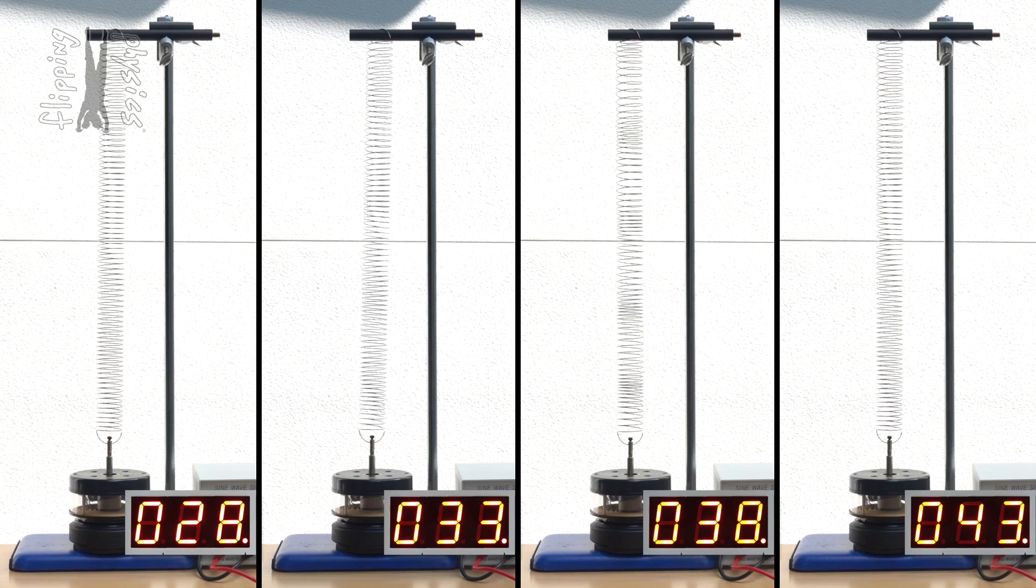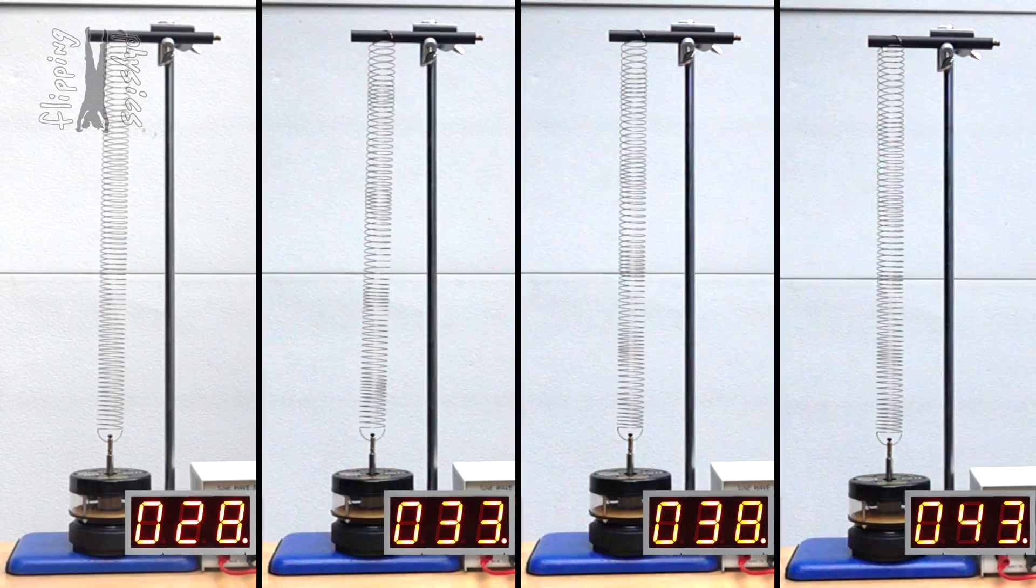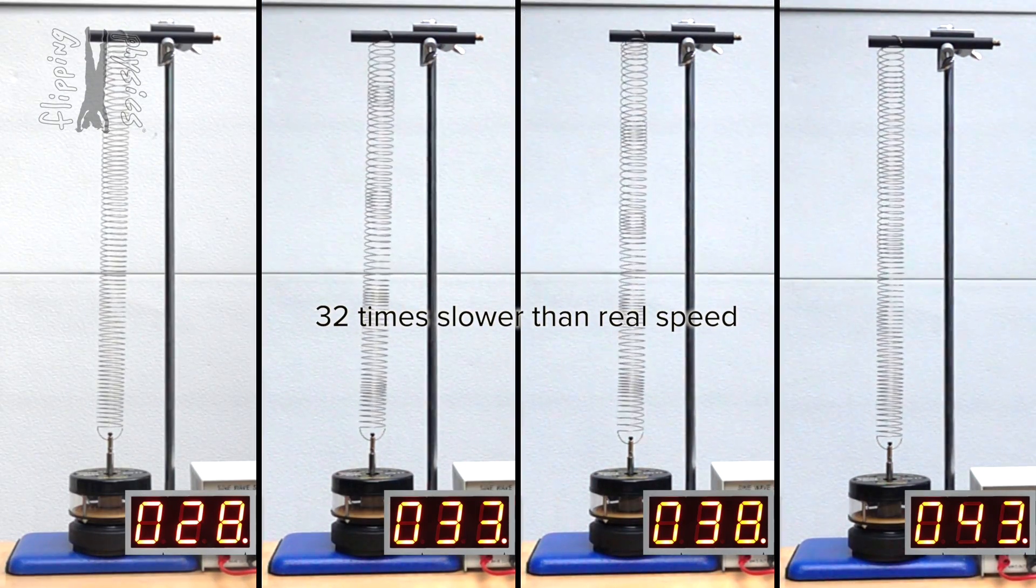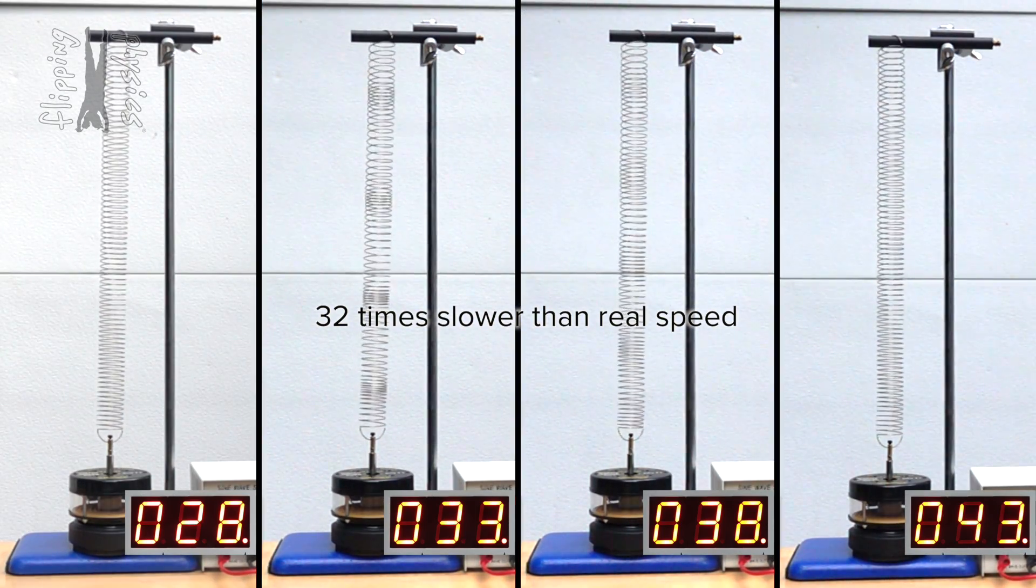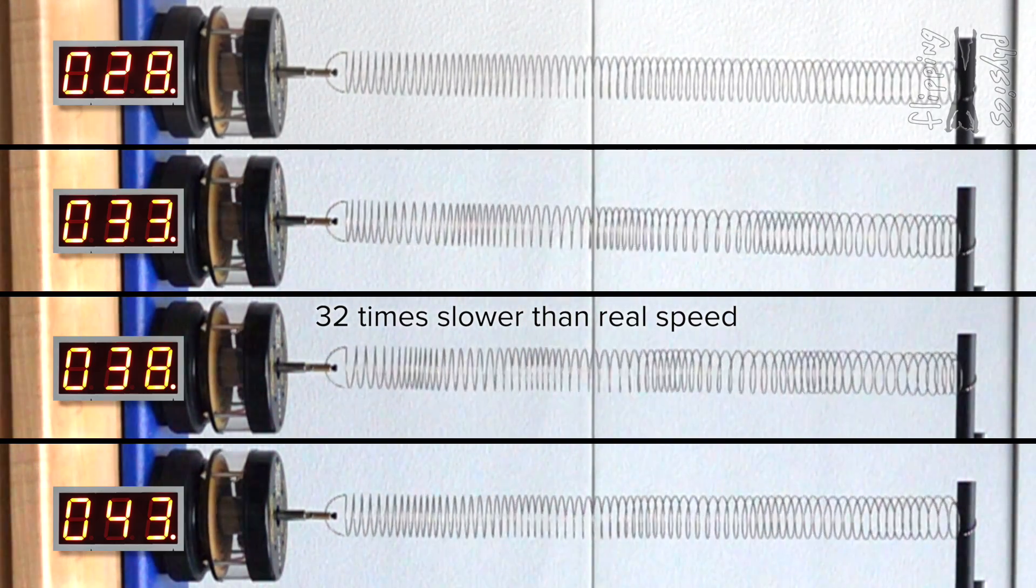Actually, just like before, it is difficult to see what is happening at real speed. So, let's slow it down to 32 times slower than real speed. And also, let's turn all the videos horizontal so the springs are bigger on the screen.